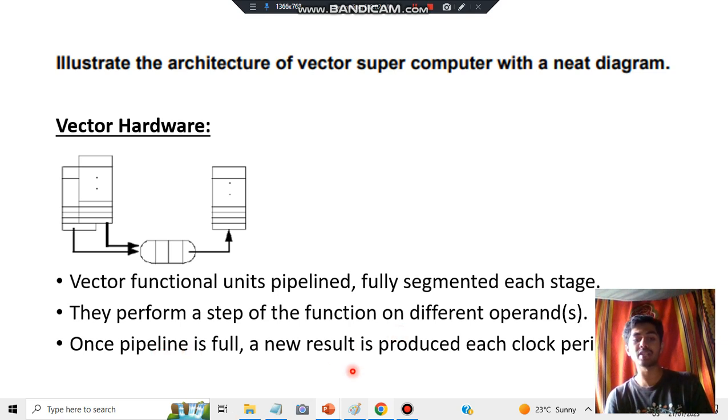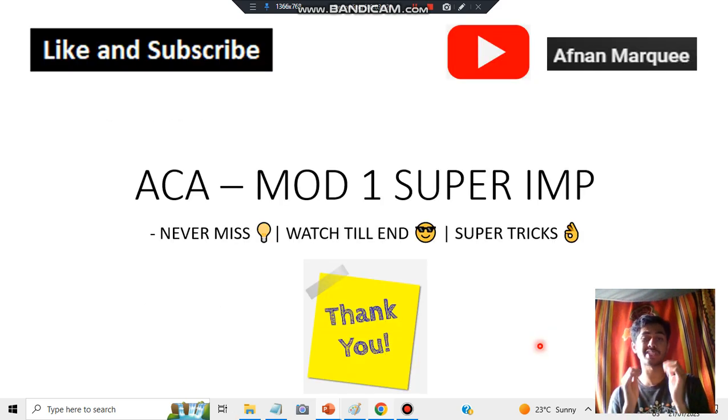Finally, once a pipeline is full, a new result is produced on each clock period. Clock period means a specific amount of time. After the specific amount of time gets over, we will be producing a new pipeline. Basically, you have to write what is vector, then write what is the function of the vector, what it uses. It uses registers and the pipeline technology in which multiple processors will be performing at a single time, and you will be getting the result. Those will be segmented and they will be stored in the register. This is all what you have to write in depth. Make sure to like and subscribe to the channel for more videos like this. Thank you so much for watching. I will see you in the next one.